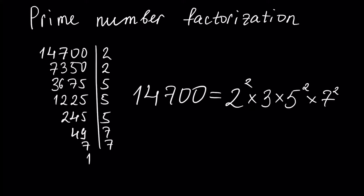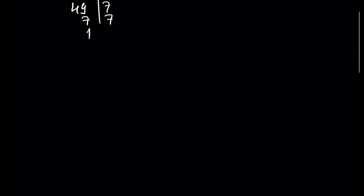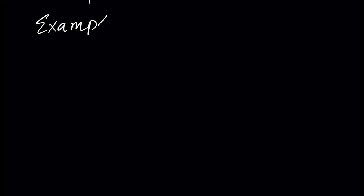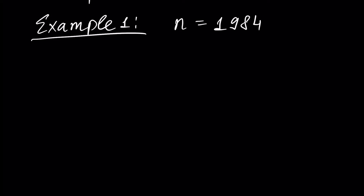Let's get started. We will describe an algorithm using several examples. Example 1: let's write the factorization into prime numbers for number N = 1984. To do this, we write 1984.